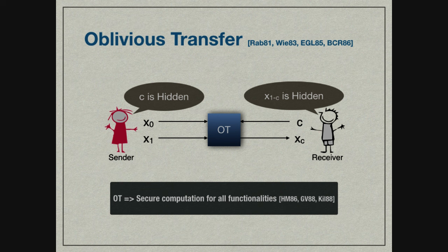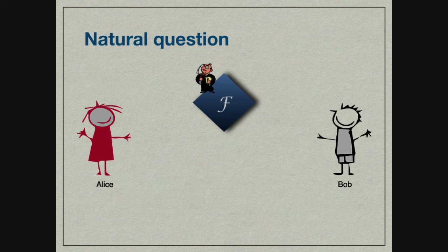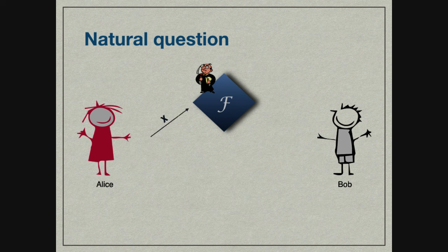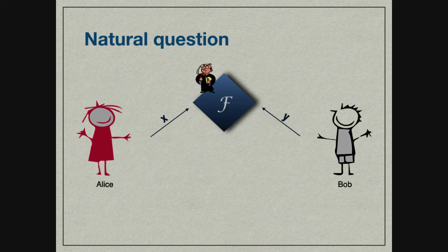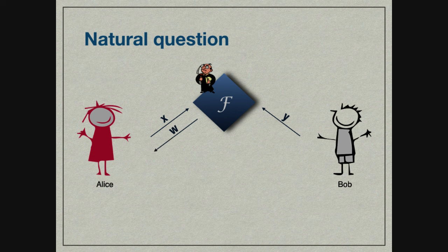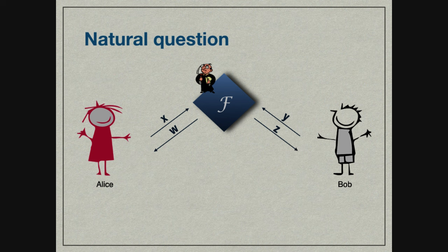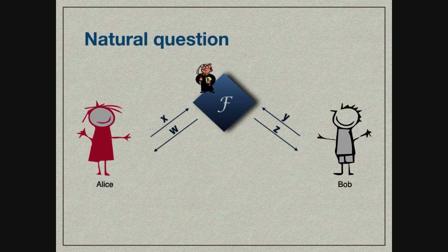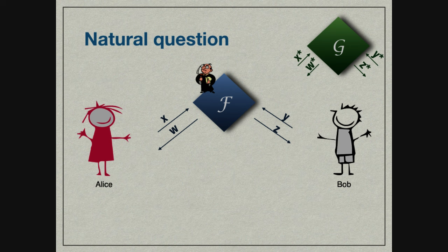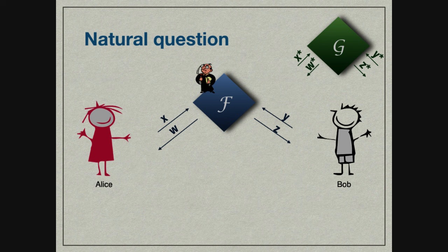OT implies secure computation for all functionalities. Now I'll ask a natural question: Suppose two parties have Oracle access to a trusted party computing a fixed functionality f, but Alice and Bob want to evaluate a different functionality g on different inputs x star and y star, and get different outputs.